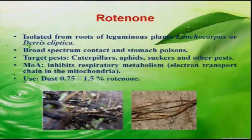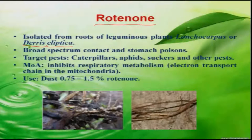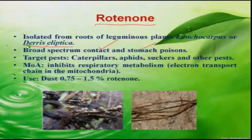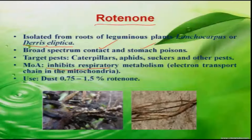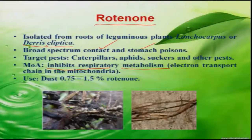Among various botanicals, another important one is rotenin. It is extracted from the roots of Derris elliptica and is a broad-spectrum contact and stomach insecticide. Target insects include sucking pests and caterpillars. It inhibits respiratory metabolism, and in the market it is available as 0.75 to 1.5 percent rotenin dust.